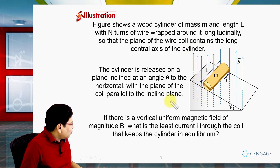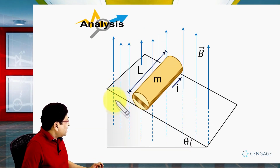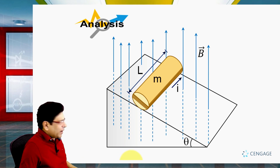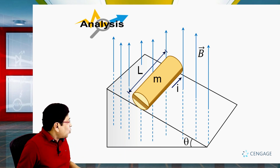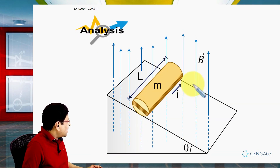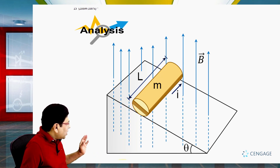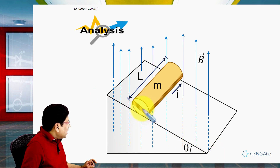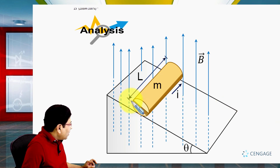Let us copy this diagram to the next page. This is a three-dimensional diagram, and to analyze the forces in detail we need to make a two-dimensional diagram. We observe this structure from the left side. From the left side, the inclined plane appears as a triangle and the cylinder appears as a circle. The current on this visible part of the coil flows from left to right.